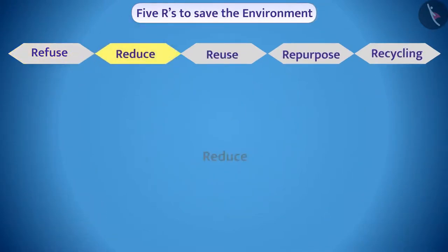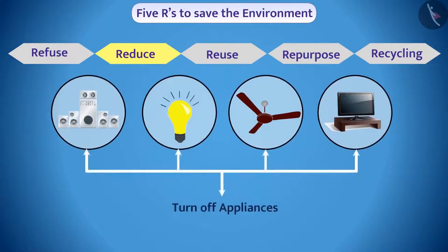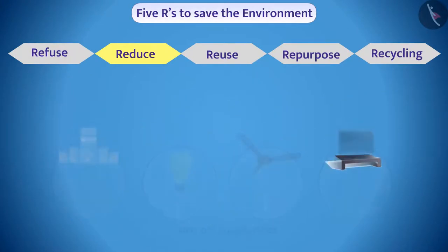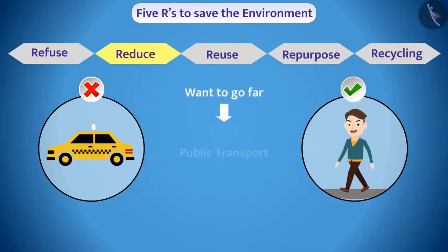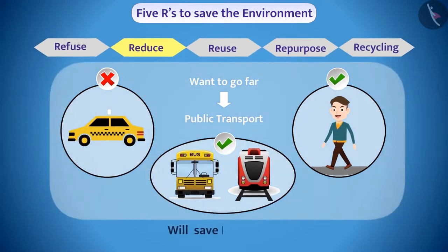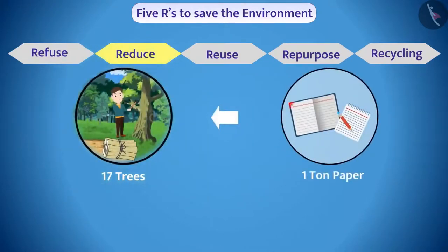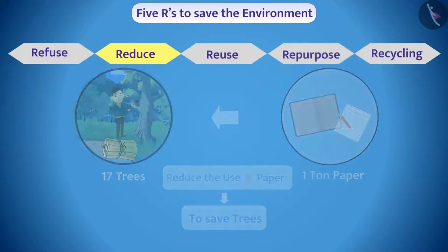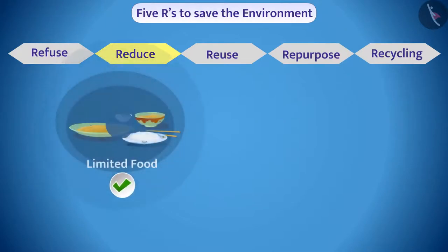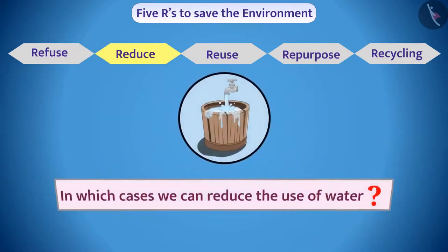The second R is Reduce. We should reduce the use of resources. For example, we can turn off appliances running on electricity when not in use. You can take a walk to go to nearby places instead of using a car, and if you want to go far you can use public transport — this will save petroleum. Did you know about 17 trees are cut to produce one ton of paper? We can reduce the use of paper so trees can be saved. We should also make food according to need so that it is not wasted. Can you tell me in which cases we can reduce the use of water? Discuss this with your friends.